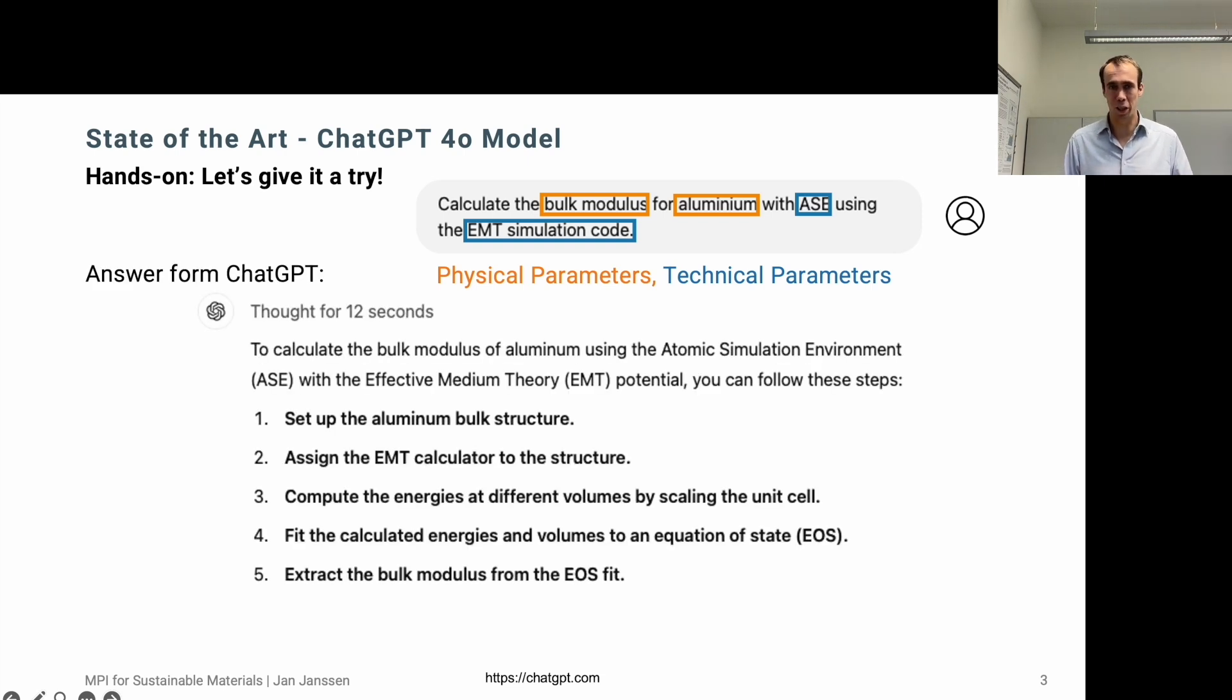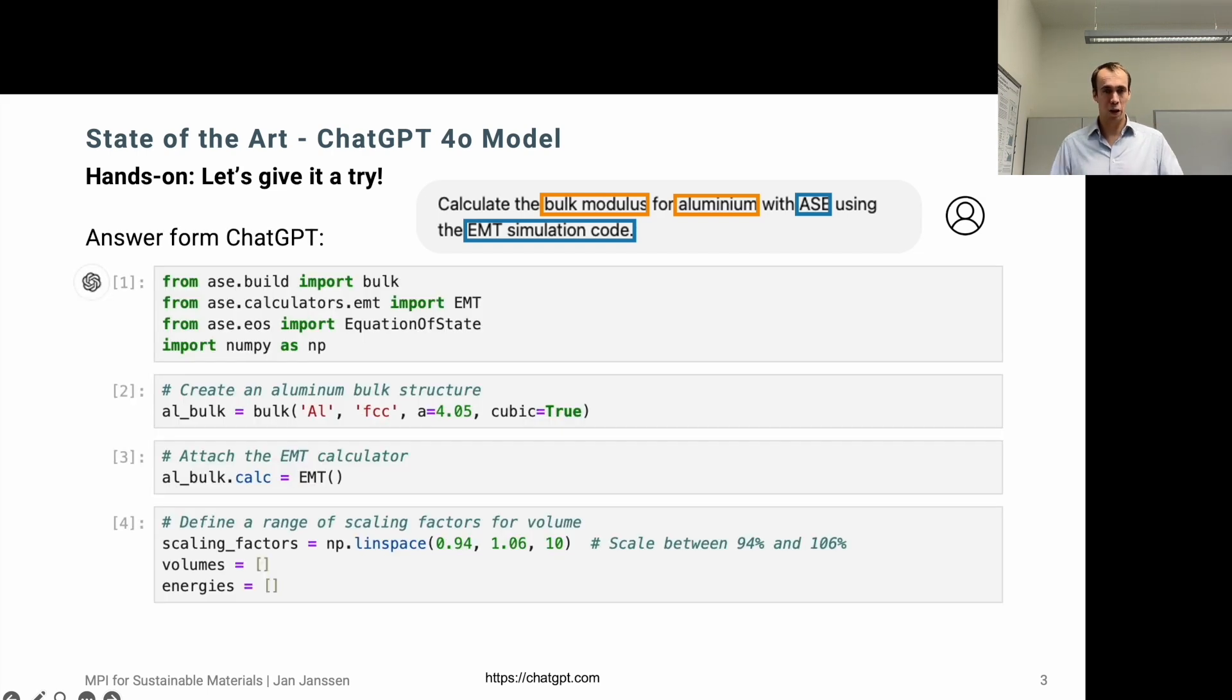Already after 12 seconds, I get a response from ChatGPT outlining setting up the bulk structure for aluminum, assigning the effective medium theory simulation code, calculating the energies at different volumes by scaling the unit cell, fitting the resulting energy volume curve with the equation of state, and extracting the bulk modulus from the equation of state. In addition to this outline, I also get the corresponding Python code. So now I took the corresponding Python code and copied it into a Jupyter notebook to help us with the evaluation. And let's think about this like an exercise from a student. Let's evaluate which part goes right and which part was wrong.